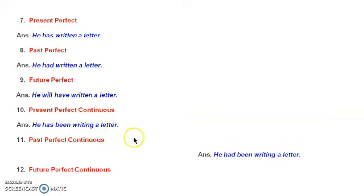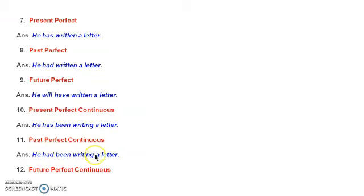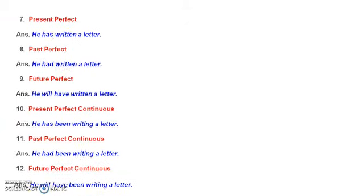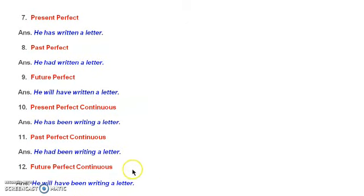For past perfect continuous: 'he had been writing a letter.' Here I change 'has' into 'had' to show that it happened in the past time. 'Had been' shows perfect, and 'writing' shows continuous. For future perfect continuous: 'he will have been writing a letter.' 'Will' shows the future time, 'have been' shows perfect tense, and 'writing' — the ing form of 'write' — shows continuous.